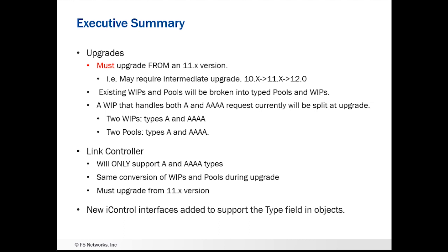Another thing to note is that Link Controller relies on a lot of the GTM infrastructure and code base. Changes are being made, but Link Controller will only support the A and Quad A types. You're going to see the same conversion of wide IPs and pools during the upgrade, and once again you have to go through version 11.x before upgrading to 12.0. Additionally, since we have these new types, iControl has been changed. Two new interfaces have been introduced into iControl to support the new types within pools and wide IPs. If customers upgrade, what they have will still work because they're only using A and Quad A, and the old iControl interfaces will handle that. As soon as they start adding MX records or SRV, they'll have to switch over to these new iControl interfaces that support the new type definitions.